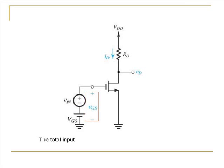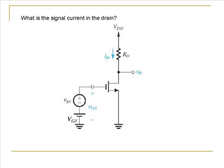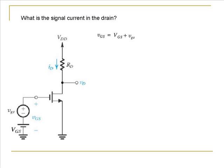The total voltage, which is the sum of the DC voltage and the AC signal, is usually written as VGS. Now let's think about what the current in the drain would be, and more specifically, what the signal current in the drain is — that is, the current due to the signal applied at the gate. If we assume the MOSFET to be in saturation, we can write the drain current equation in the form shown in the slide.